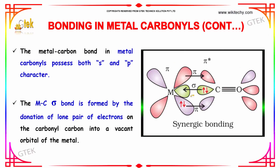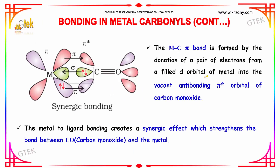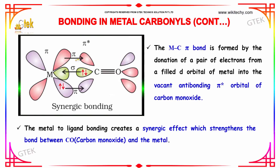The metal-carbon bond in metal carbonyls possesses both sigma and pi characteristics. The metal-carbonyl sigma bond is formed by the donation of lone pairs of electrons on the carbonyl atom into a vacant orbital of the metal. The metal-carbon pi bond is formed by the donation of a pair of electrons from a filled d-orbital of the metal into the antibonding pi-star orbital of carbon monoxide.